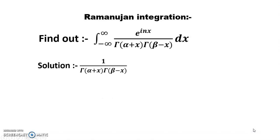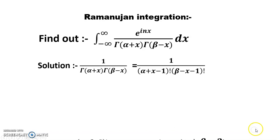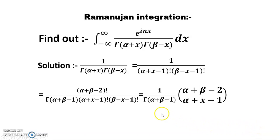We start from 1 over gamma(alpha plus x) times gamma(beta minus x), which equals 1 over (alpha plus x minus 1) factorial times (beta minus x minus 1) factorial. I use the technique of multiplying both numerator and denominator by gamma(alpha plus beta minus 1), which equals (alpha plus beta minus 2) factorial.